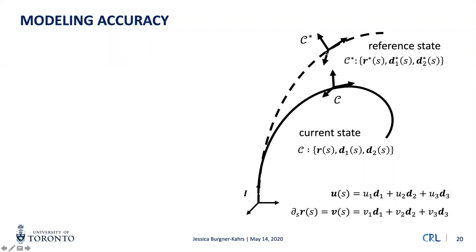We describe the change of state from an initial state C* to a current state C by tracking the orientation of the directors relative to pre-deformation orientation, then relating this through strain variables using continuum mechanics. Specifically, we use Cosserat theory of elastic rods to establish an explicit set of differential equations relating the actuation — translation and rotation of the tubes — to the robot's shape. This model works reasonably well; we can compute at about one kilohertz depending on robot length.